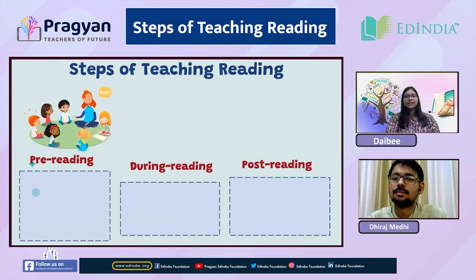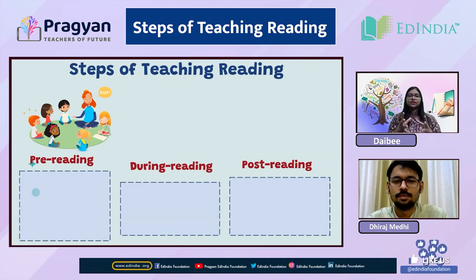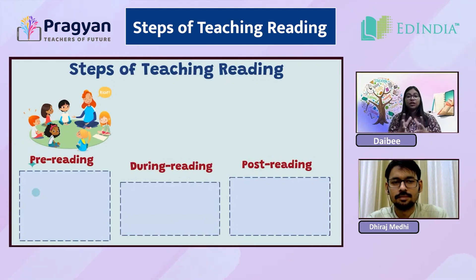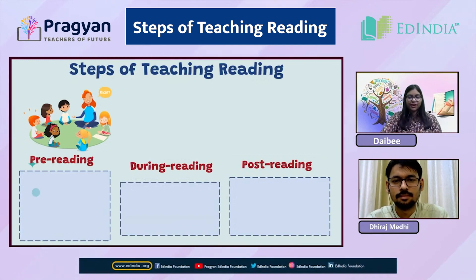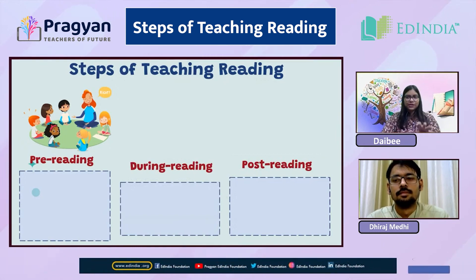In any reading exercise, we follow three steps: pre-reading activities, during reading, and post-reading. Through these three steps, we achieve our ultimate learning outcome — we try to develop reading skills in children. Let's have a brief discussion about what these three steps are.